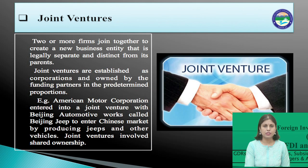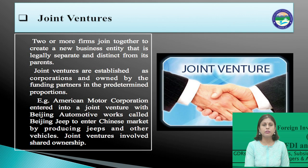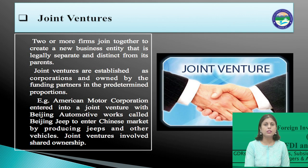Next is joint ventures. When two or more firms join together to create a new business entity that is legally separate and distinct from its parents, it is a joint venture. Joint ventures are established as corporations and owned by the funding partners in predetermined proportions. For example, American Motor Corporation entered into a venture with Beijing Automotive Works called Beijing Jeep to enter the Chinese market by producing jeeps and other vehicles. Joint ventures involve shared ownership, provide required strength in terms of capital, latest technology, and human talent, and enable companies to share risk in foreign markets. They also involve local companies, which improves the local image in the host country and satisfies government requirements.